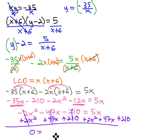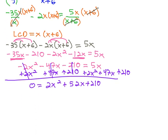And that gives us zero equals 2x squared plus 52x plus 210. Let me scroll and get us a little more space to work.